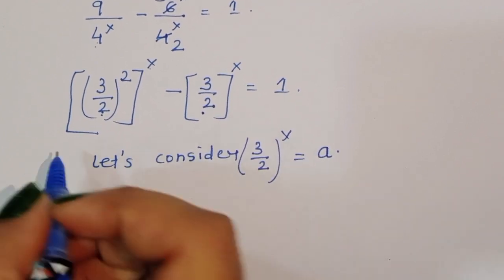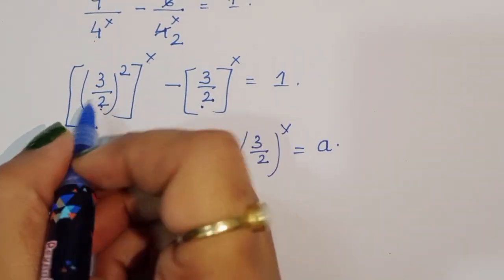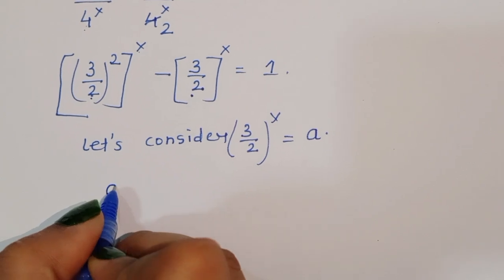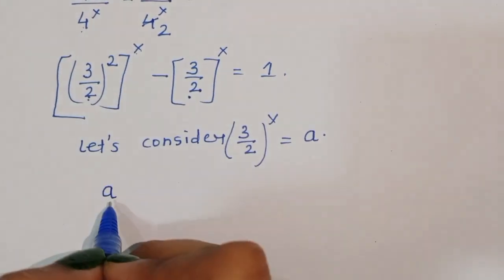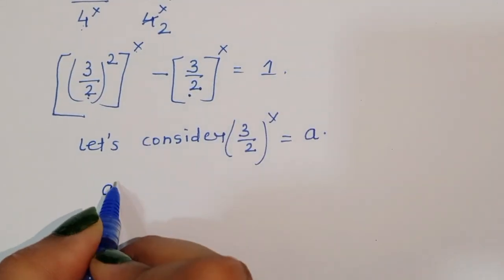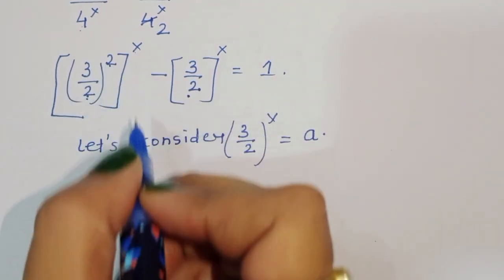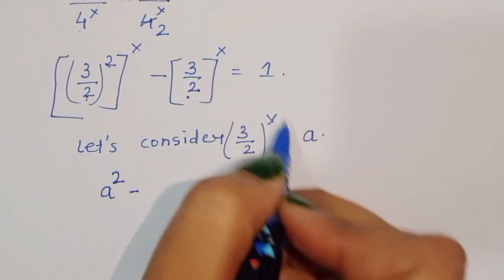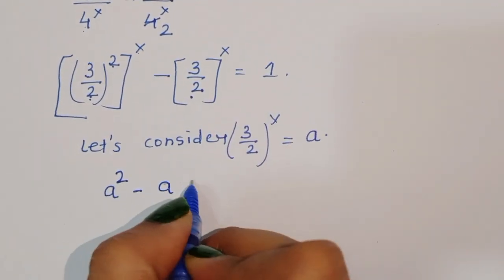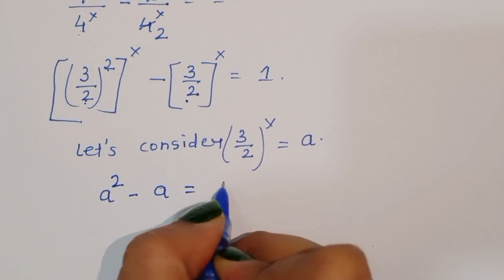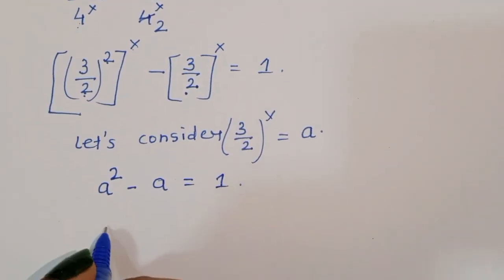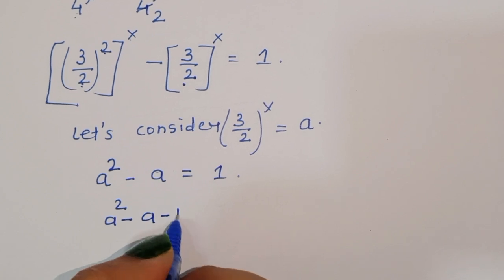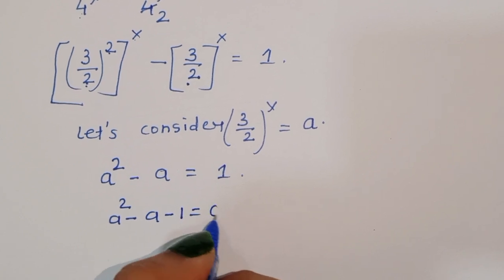So we can write (3/2)^2x as a², and (3/2)^x as a. Therefore the equation becomes a² minus a is equal to 1, which gives us a² minus a minus 1 is equal to 0.